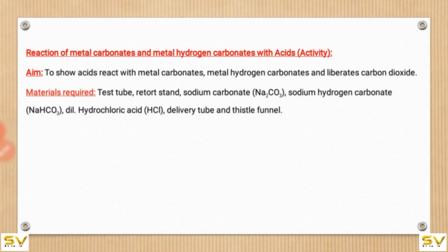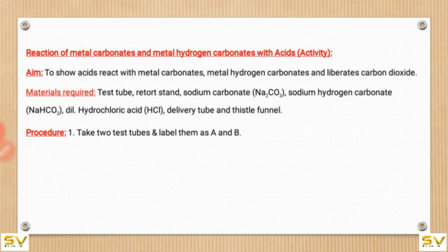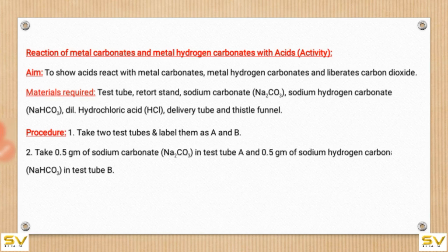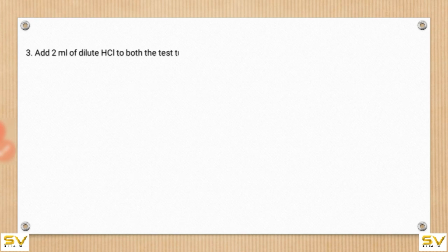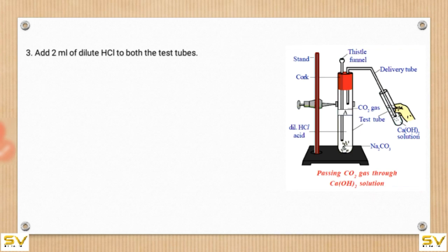Procedure: Take two test tubes and label them as A and B. Take 0.5 grams of sodium carbonate in test tube A and 0.5 grams of sodium hydrogen carbonate in test tube B. Add 2 ml of dilute HCl to both test tubes. This is the diagram of the setup.